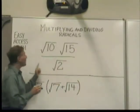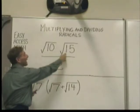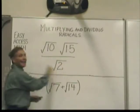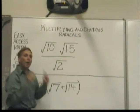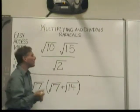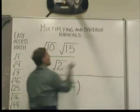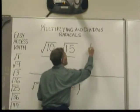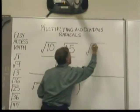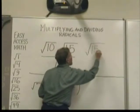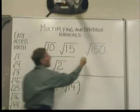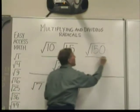In our first one, we have both multiplication, because they're next to each other, and division. You multiply the numbers just as you ordinarily would. Ten times fifteen is one hundred and fifty, but I keep it in the radical — one hundred and fifty. And the two on the bottom just comes over.